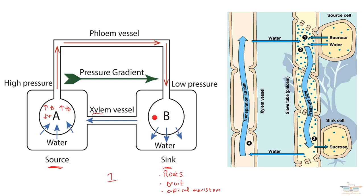So what happens in the cells of the sink is the solute potential is going to go down because the sugars are either used up or they are stored in an insoluble form like starch. That means the water potential of the cells in the sink will go up. And that will cause water to leave the cells of the sink and enter the xylem vessel.